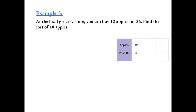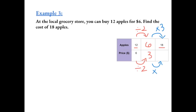At the local grocery store, you can buy 12 apples for $6. Find the cost of 18 apples. We can't go directly from 12 to 18, so we stop at a number that goes into both: 6. To get from 12 to 6, we divide by 2, and to keep our ratios equivalent, we divide the price by 2 as well. 6 divided by 2 gives us $3. Now we go from 6 apples to 18 apples by multiplying by 3, and doing the same to the price gives us $9. The cost of 18 apples is $9.